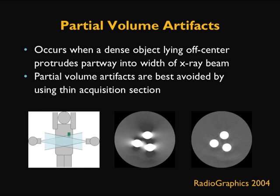Another classic type of physics-based artifact is the partial volume artifact. This occurs when a dense object lying off-center protrudes partway into the width of the X-ray beam. The cartoon shown illustrates a dense object at different points during data acquisition around the patient. The middle image shows three cylindrical objects exhibiting dark bands from partial volume artifact. Partial volume artifacts are best avoided by using very thin acquisition sections, as shown in the third image. Most CT acquisitions today are acquired at the thinnest slice possible to avoid partial volume artifacts and to aid 3D image reconstruction.